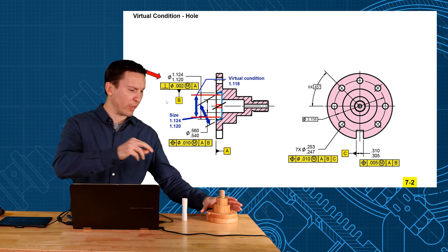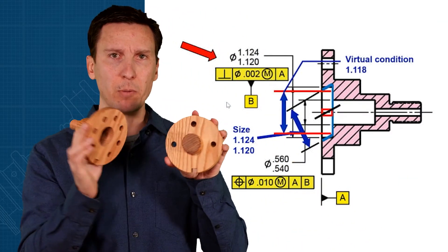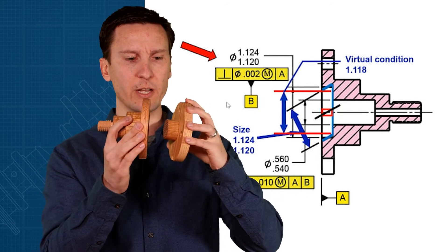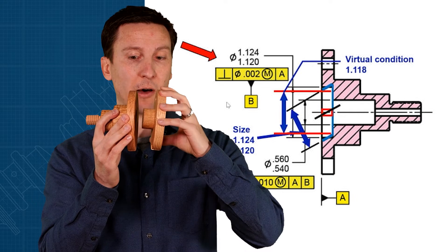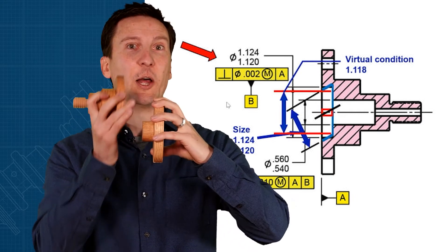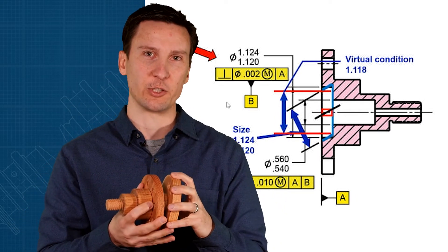Now why would we want to know that is that's actually what your mating part is seeing. When these two parts go together it doesn't get to see the size of that hole it actually gets mounted to the face so it's going to see the perpendicular size which we call the virtual condition.